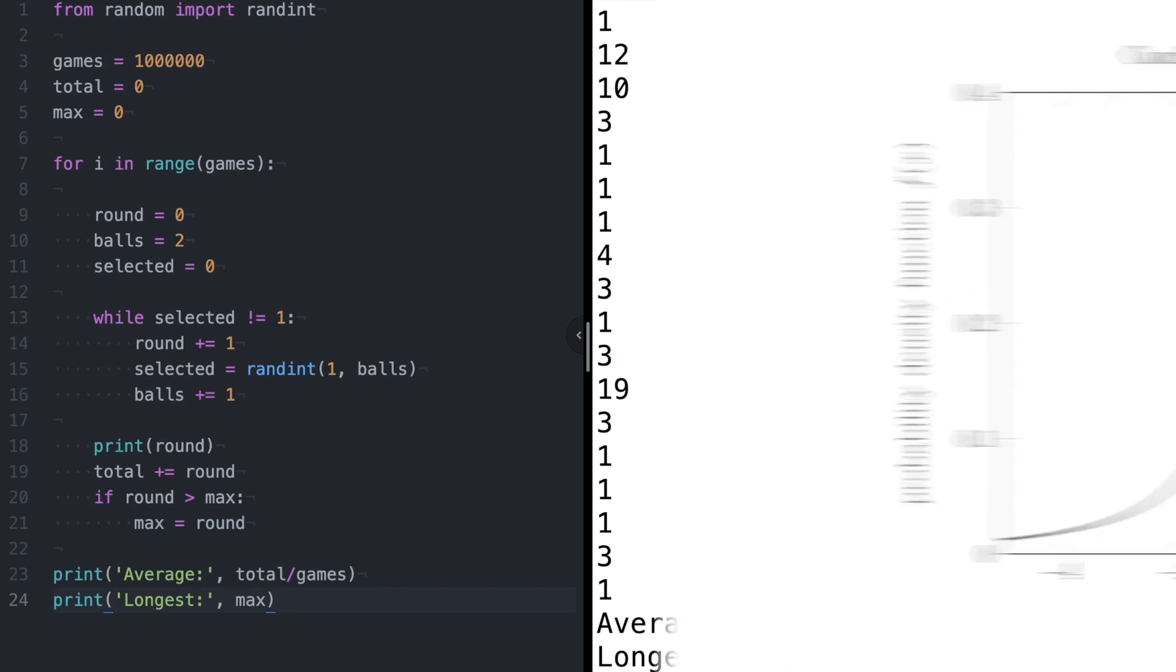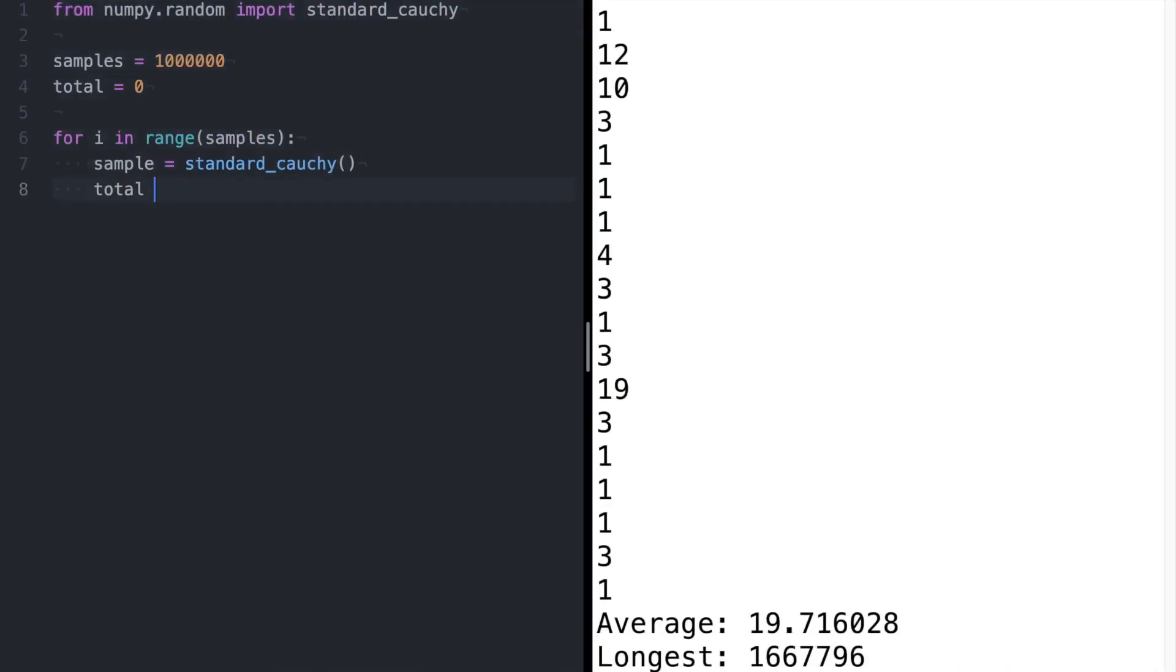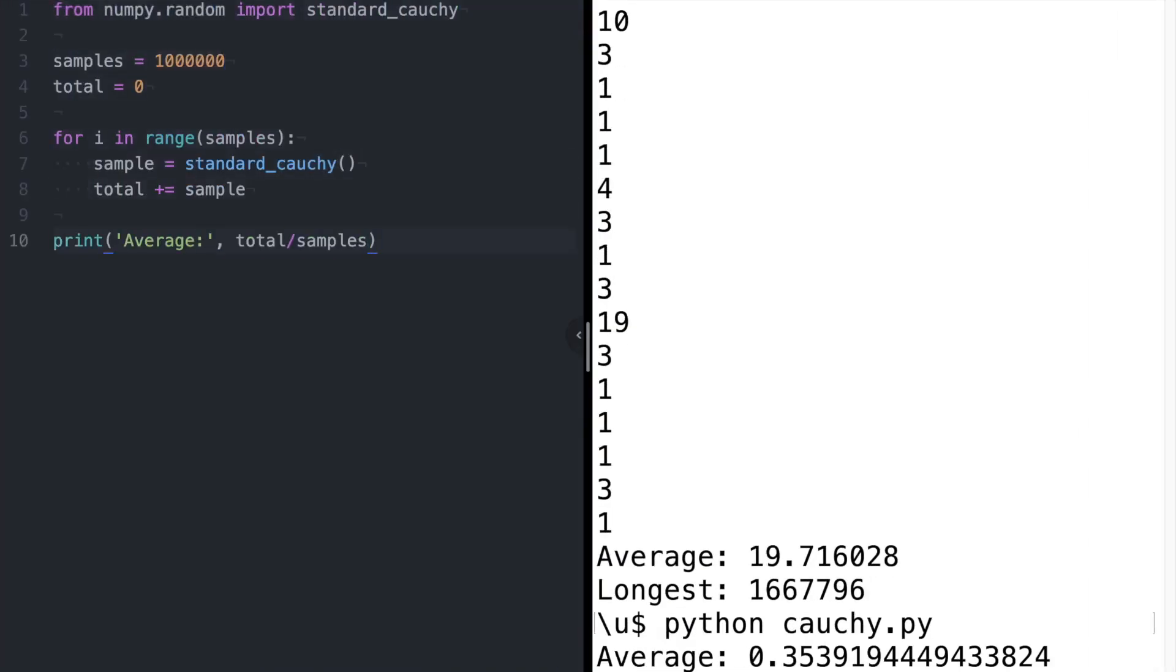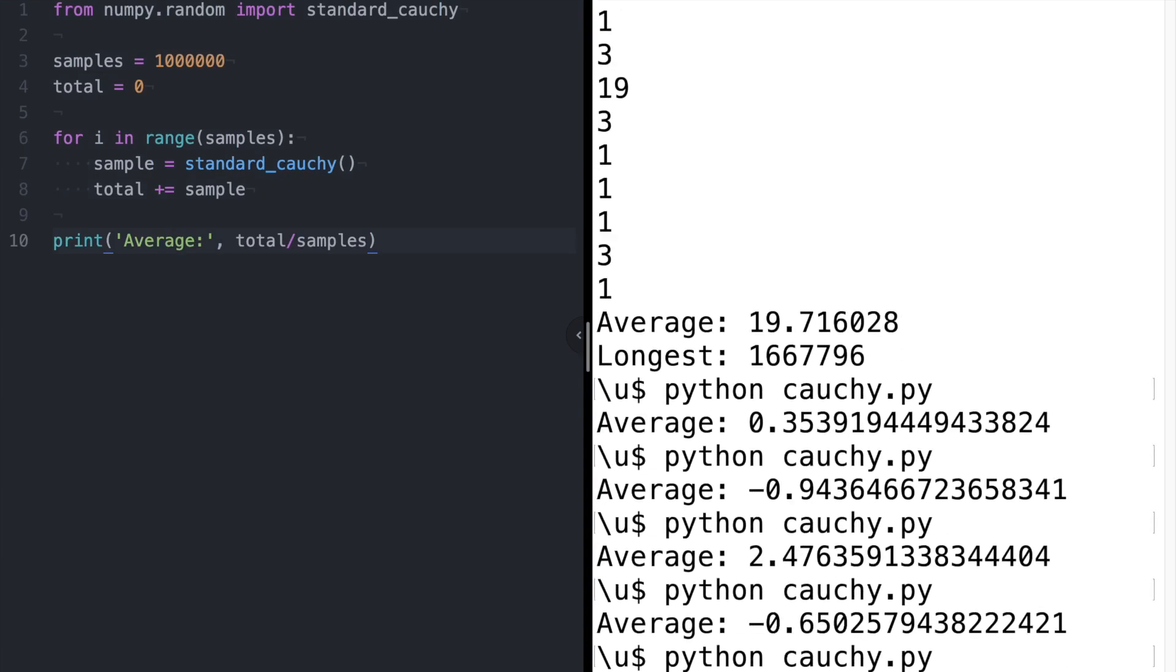Here's another example that crops up in physics, the Cauchy distribution. This is a bit different because the possible outputs of this random number generator are arbitrary real numbers rather than just whole numbers, but the effect is very similar. But wait, you might ask. This distribution is symmetric. Surely the expected value is right in the middle, at zero. Well, that's what you'd think, but if we take a million random samples from this distribution and average the results, we don't get zero. And if we repeat this, the results vary wildly.